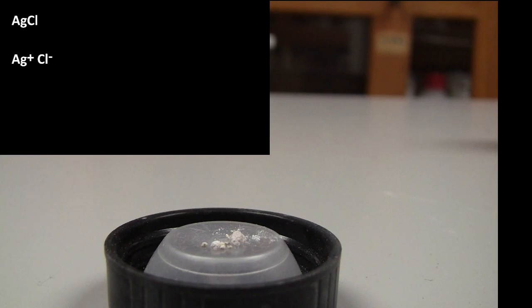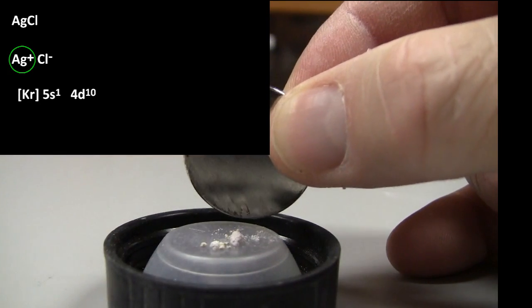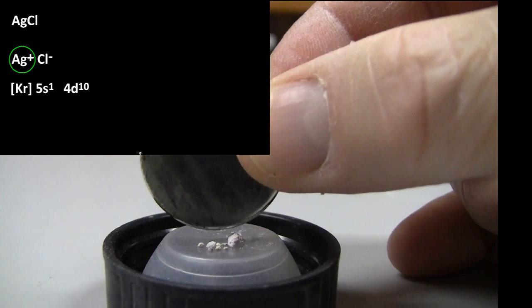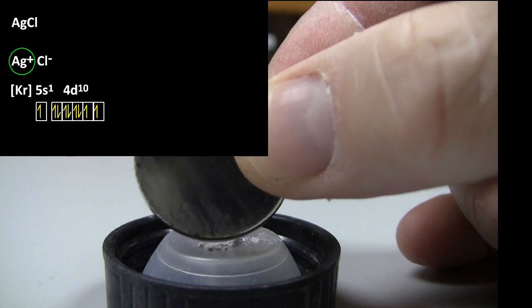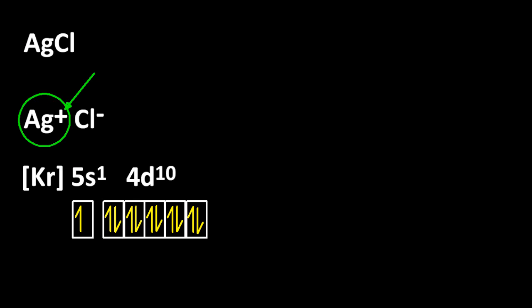So let's look at some real world examples. I'm going to bring a magnet close to silver chloride. And that doesn't seem to be attracted to it. So it can't be ferromagnetic or paramagnetic then, if it's not attracted to the magnet.